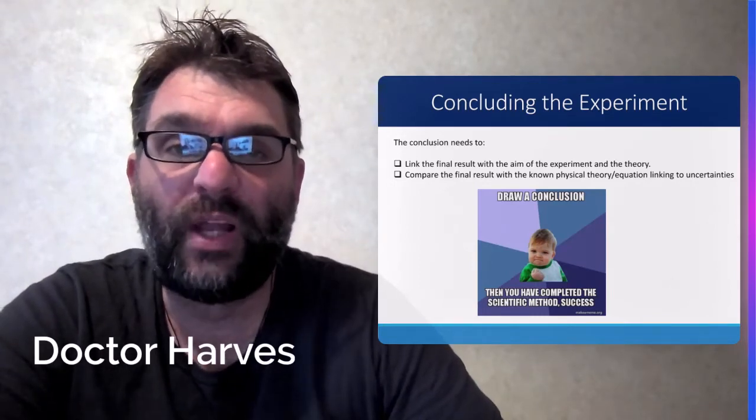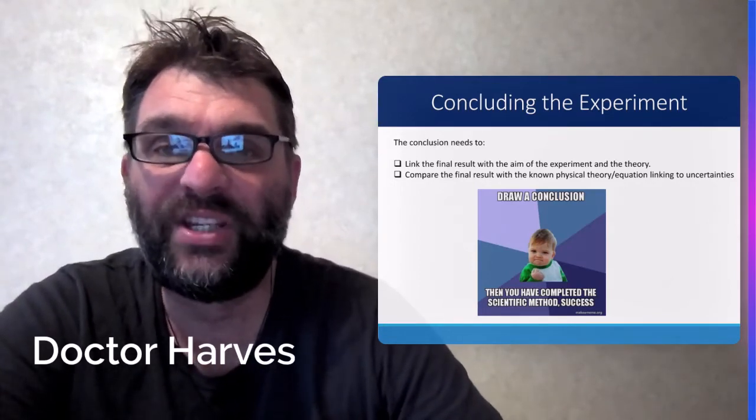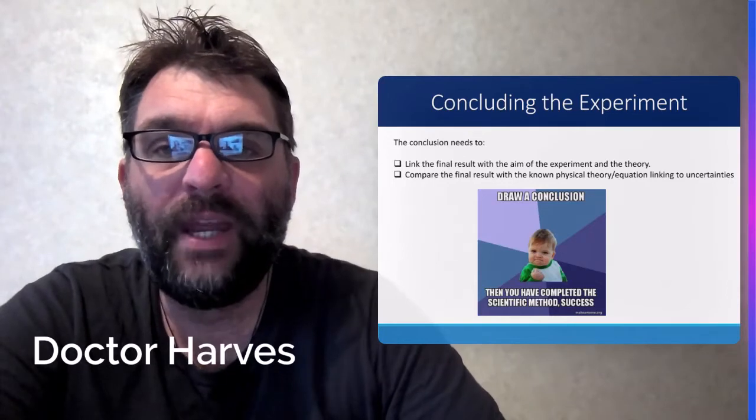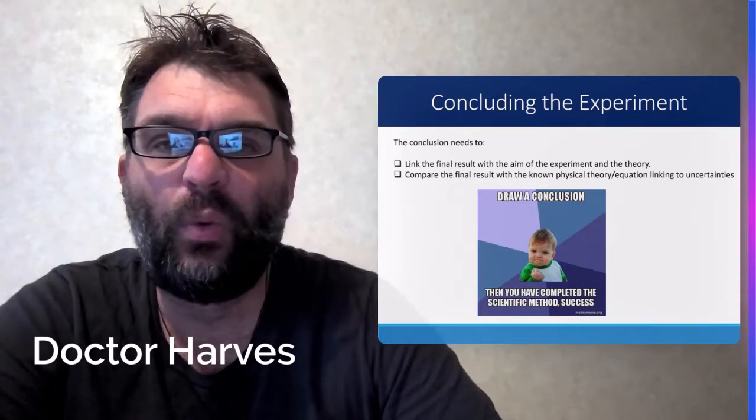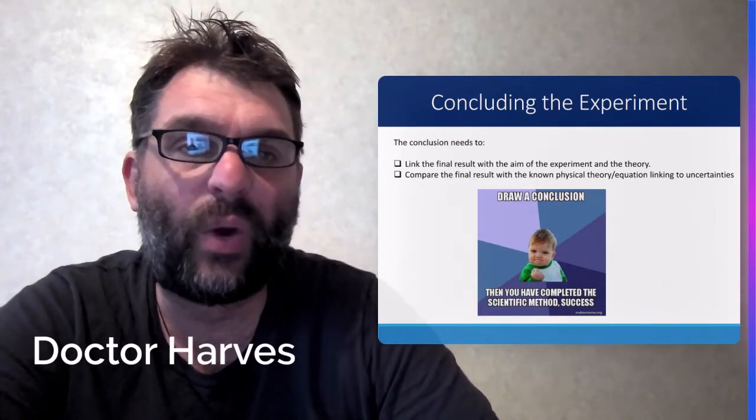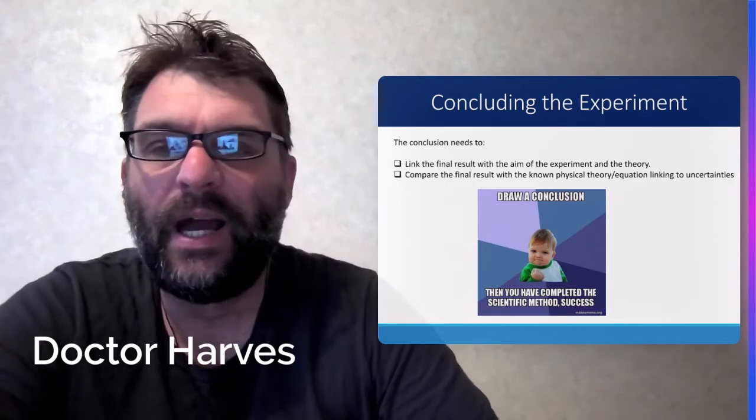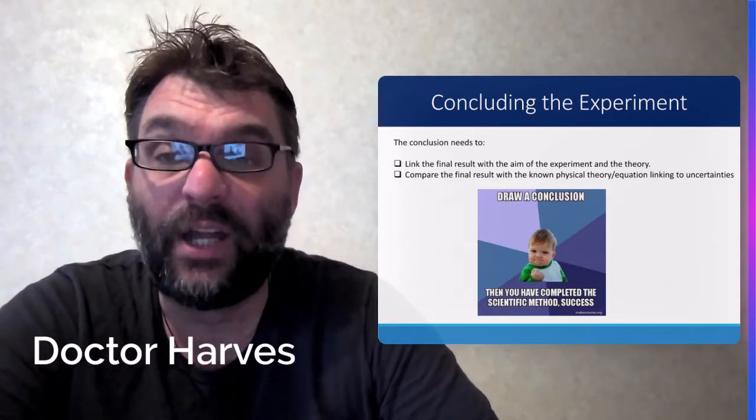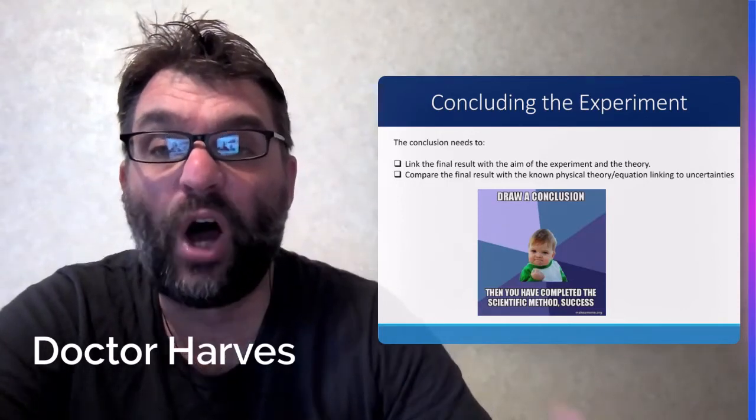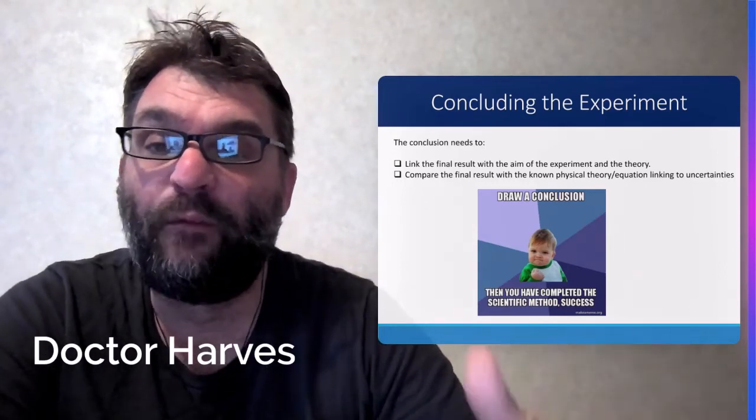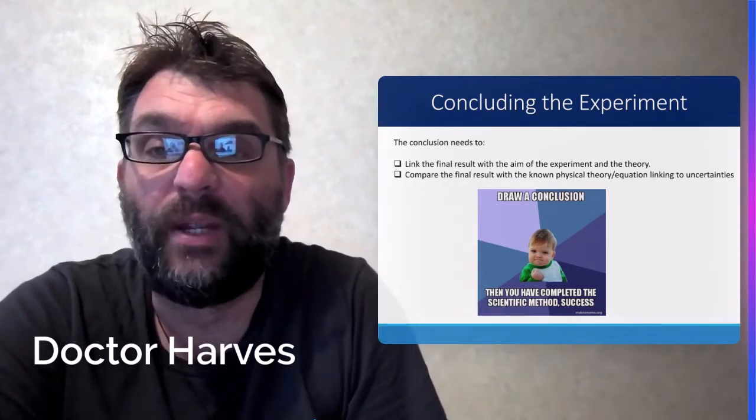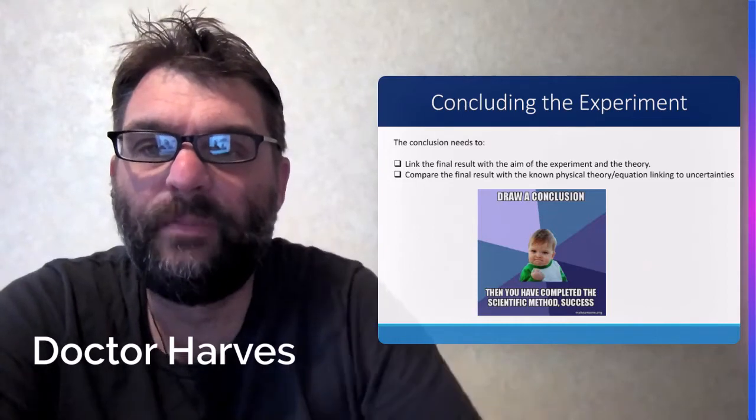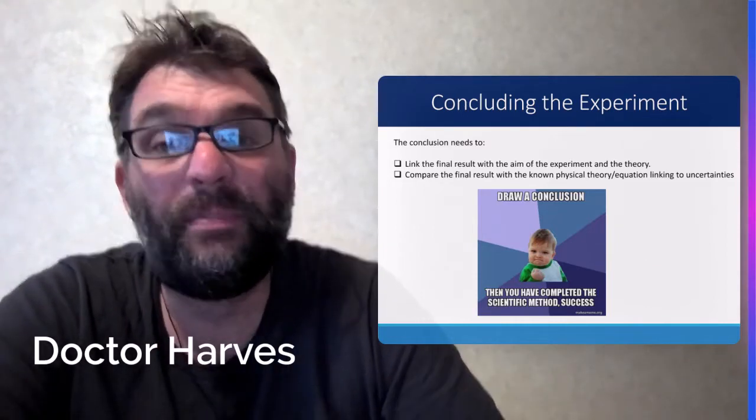So did you get a straight line relationship? What did that show? What does that illustrate? And then you're comparing the final result with a known physical theory equation or value linked with the appropriate uncertainty. So you're basically saying, well, I think that the number for this constant is going to be x plus or minus x. You're just comparing it.